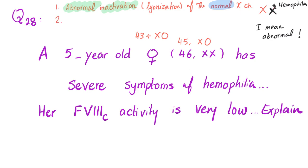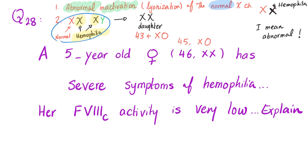There is another possibility. Her mother is a carrier for hemophilia A, and her father has hemophilia disease. Her father will give her the abnormal X chromosome — there is no question about it. And there is a 50% chance that her mother will also give her the abnormal X chromosome. In this case, she will suffer from actual hemophilia disease, not just be a carrier. So these are the two possibilities.